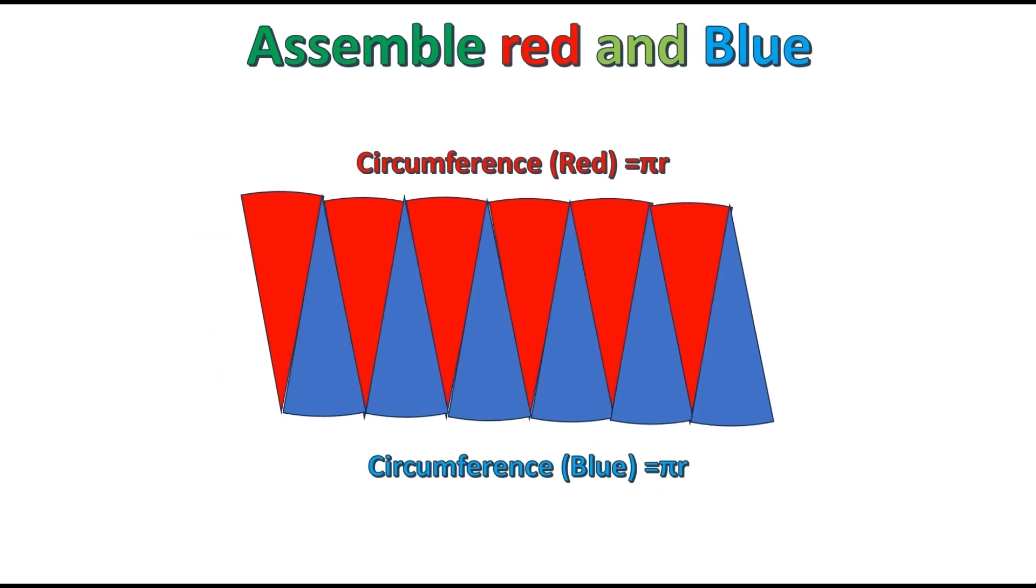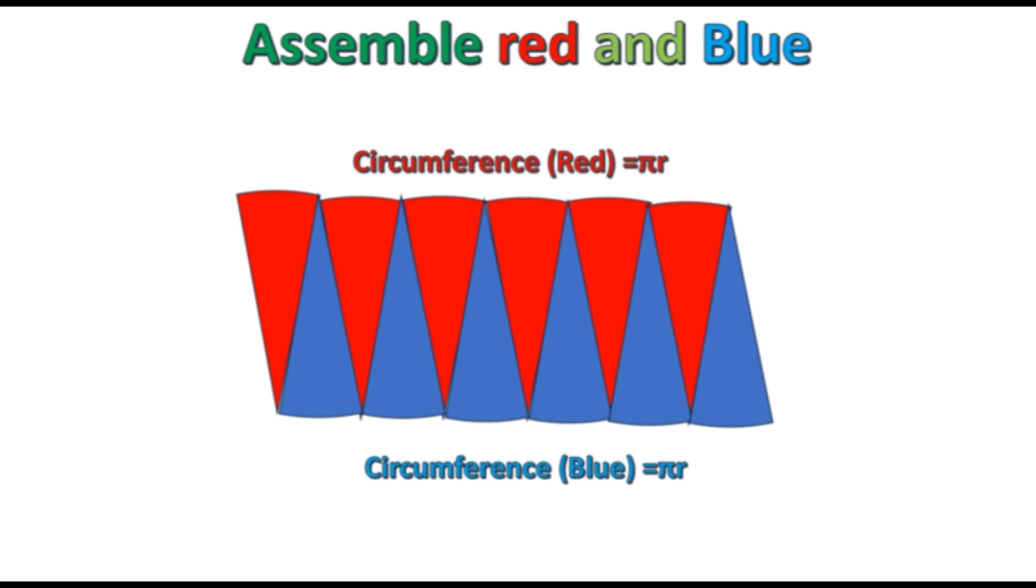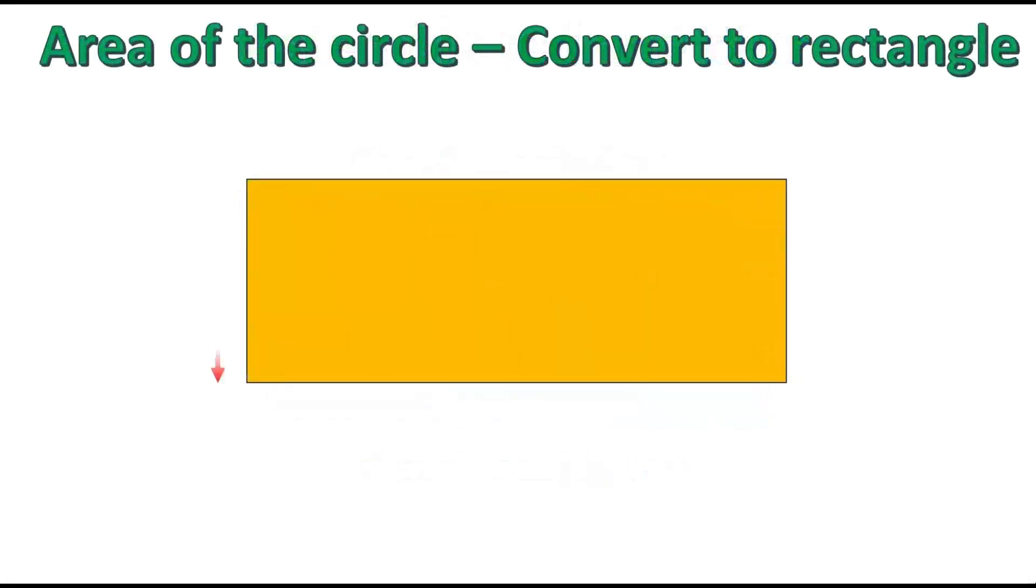It forms almost like a rectangle. If you see, the top length is almost equal to half of the perimeter πr, and the bottom also is equivalent to half of the perimeter πr. If you keep increasing the number of parts, the error will become lower. If you take thousands of parts, you will see a perfect rectangle with height equal to the radius.